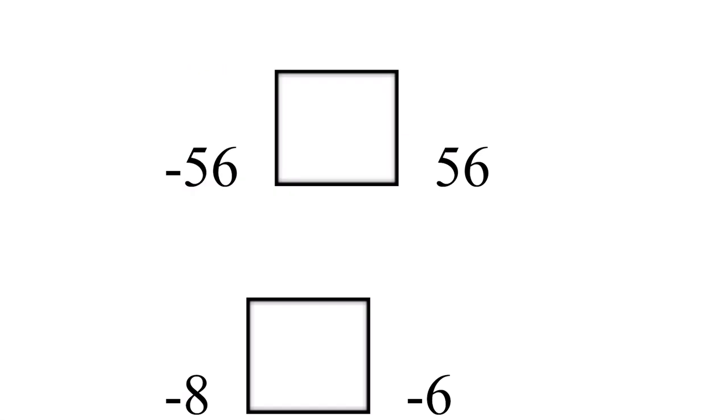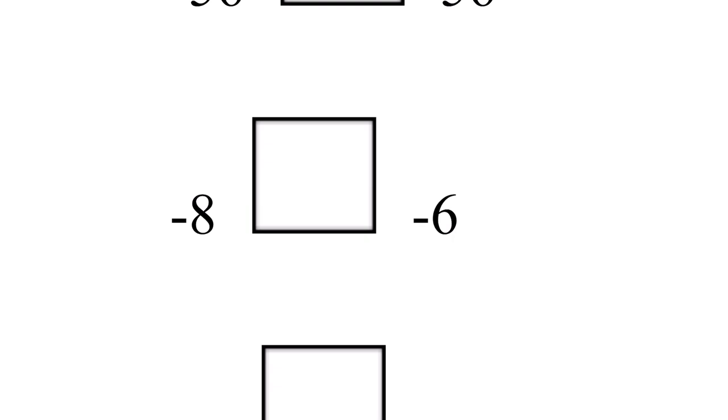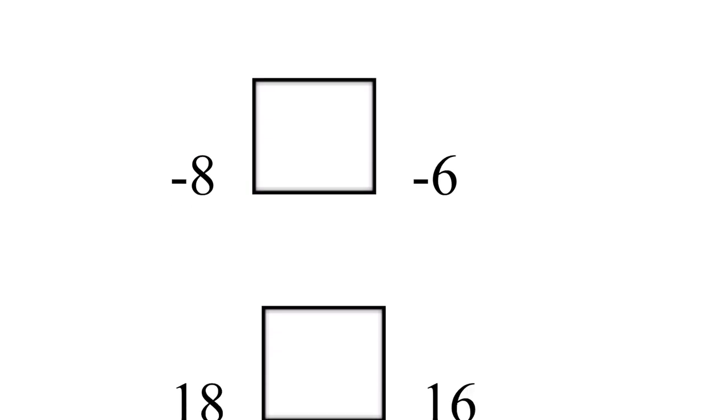Here this is positive and this is negative. Of course positive is bigger than negative, so you will write negative 56 is smaller than positive 56. Same here, which one is bigger, which one is smaller? Negative 6 is bigger, negative 8 is smaller, so negative 8 is less than negative 6.